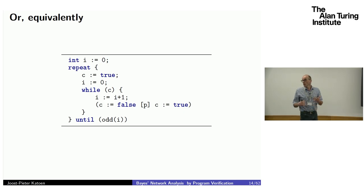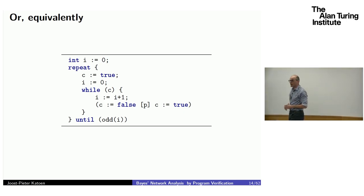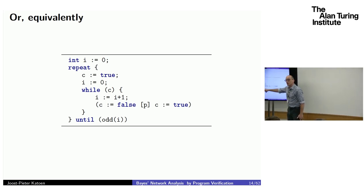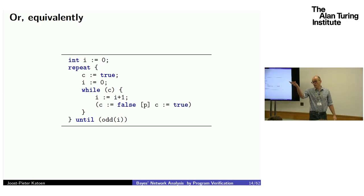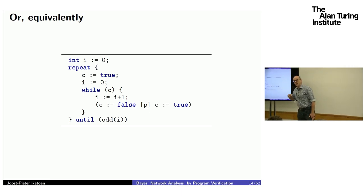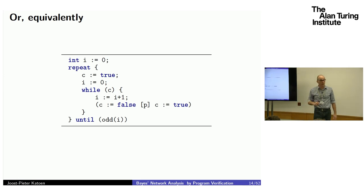Another way to view what observation does: I replaced the observation with a 'repeat until odd'. Basically, you run your program, and if you do not satisfy the guard of the observe statement, you restart the program fresh and repeat until you satisfy the guard. This program is semantically equivalent to the one before.